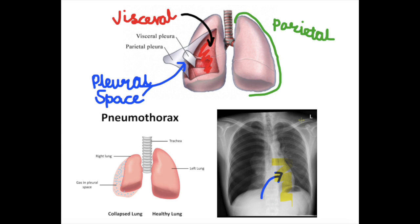We use the process of nitrogen washout in treating a small, spontaneous pneumothorax. It's effective because nitrogen is 78% of whatever you're breathing in. 21% of whatever you're breathing is oxygen. So you're breathing in mostly nitrogen, and if you have a tear in the lung or chest wall that causes buildup of air in the pleural space, most of that air — 78% — is going to be nitrogen.